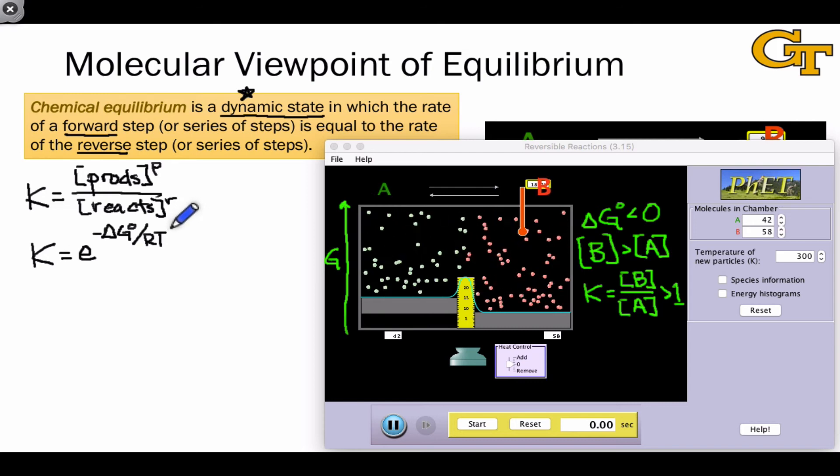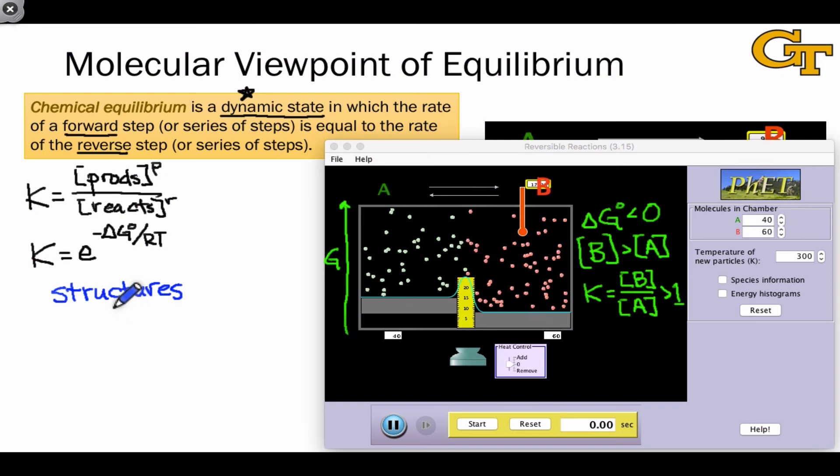What we ultimately want to be able to do for organic reactions in equilibrium is reasoned qualitatively from organic structures, specifically the structures of reactants and products, to a qualitative assessment of the delta G value. Primarily, is it greater than or less than zero?